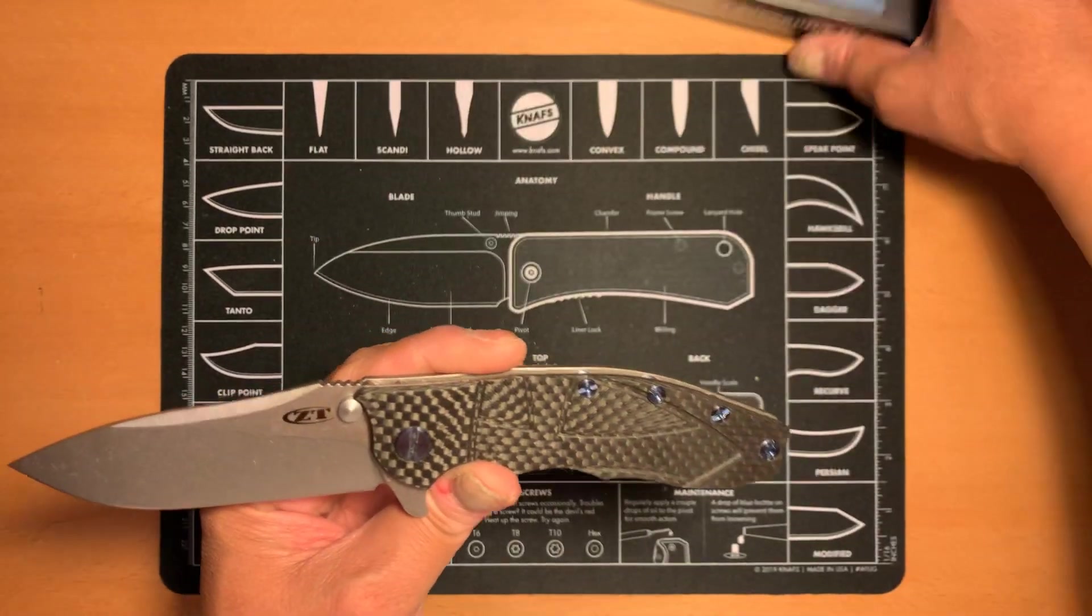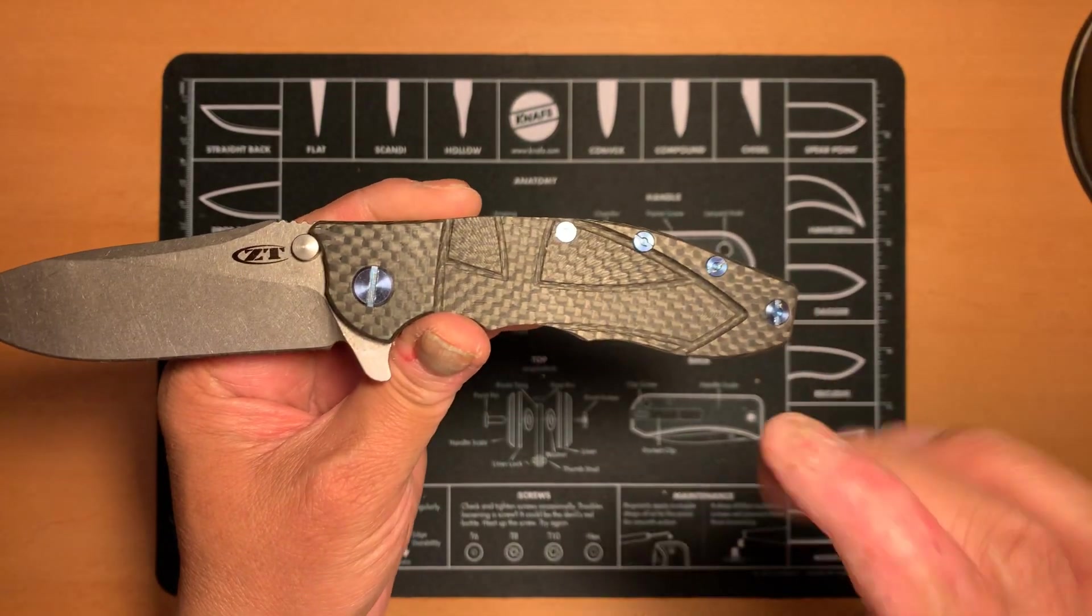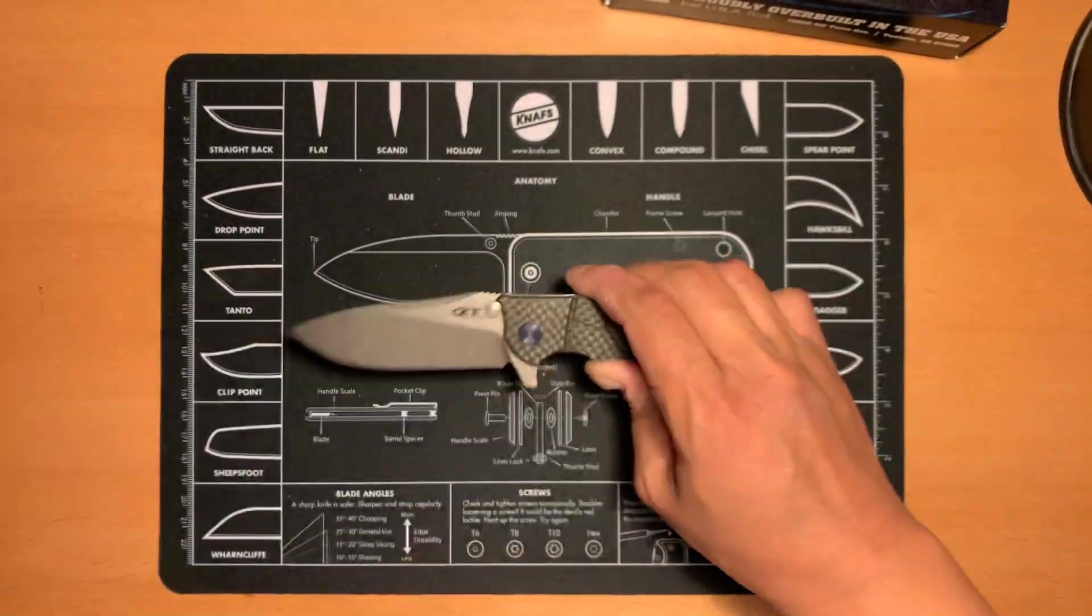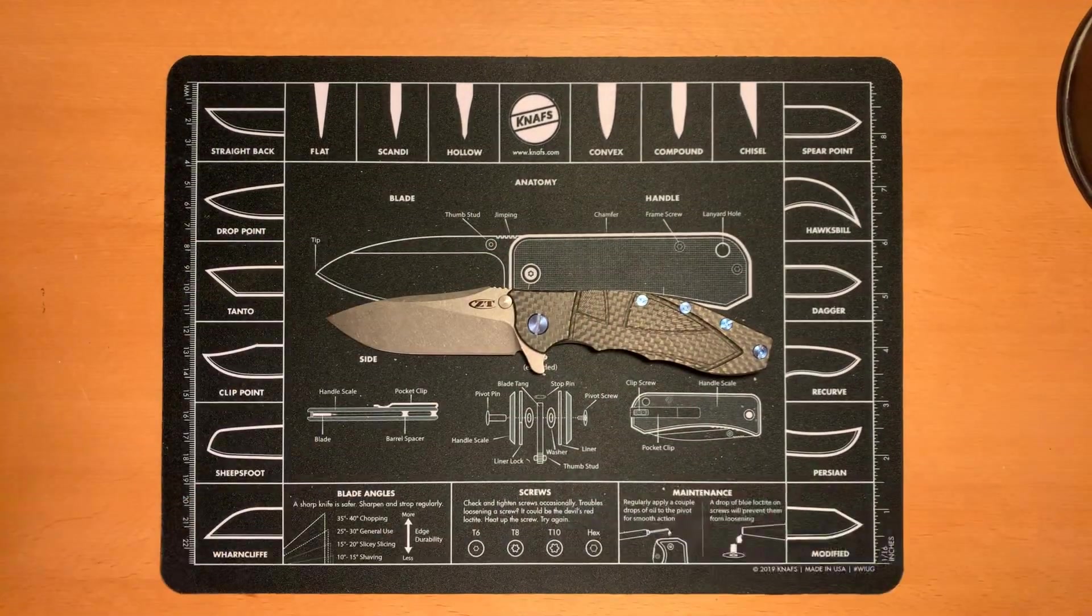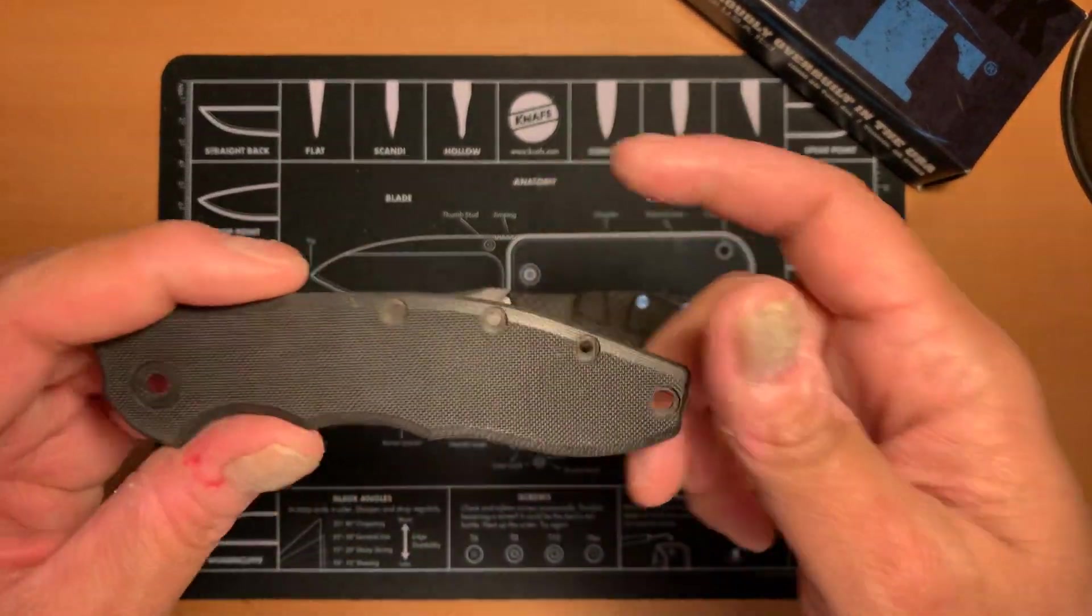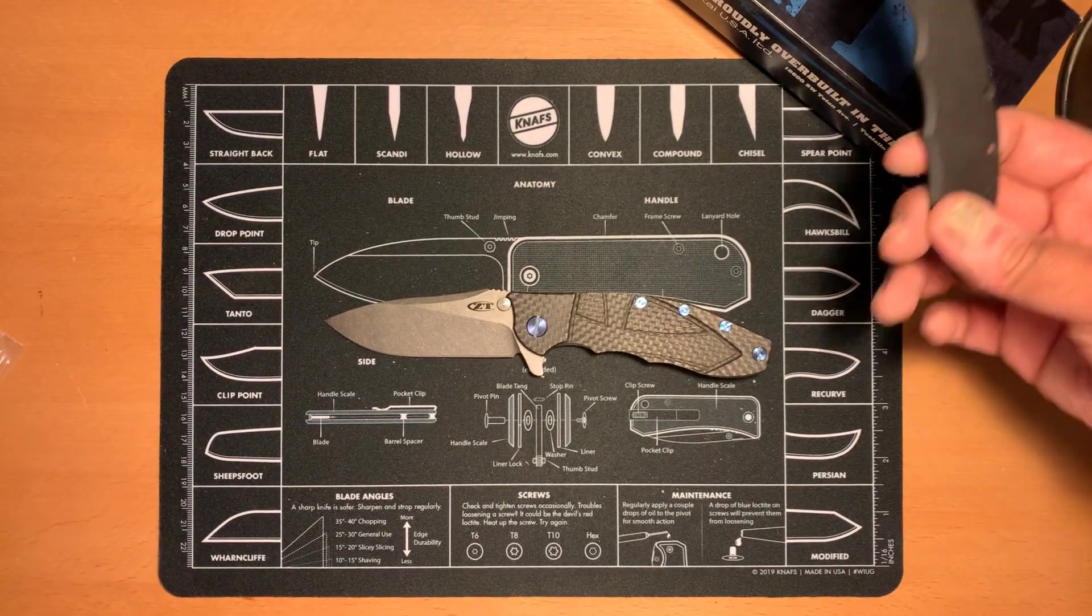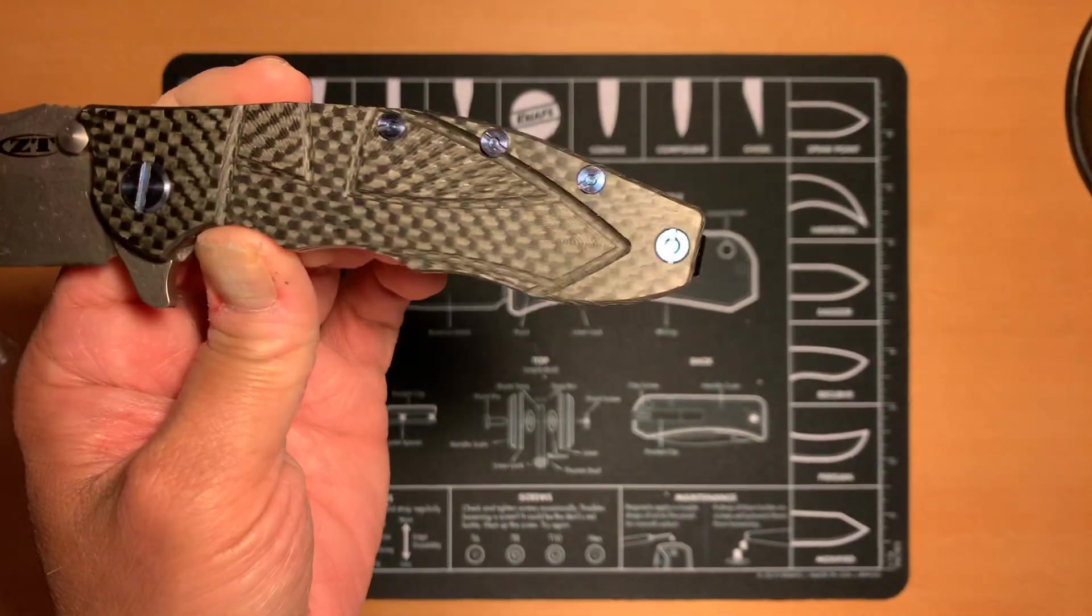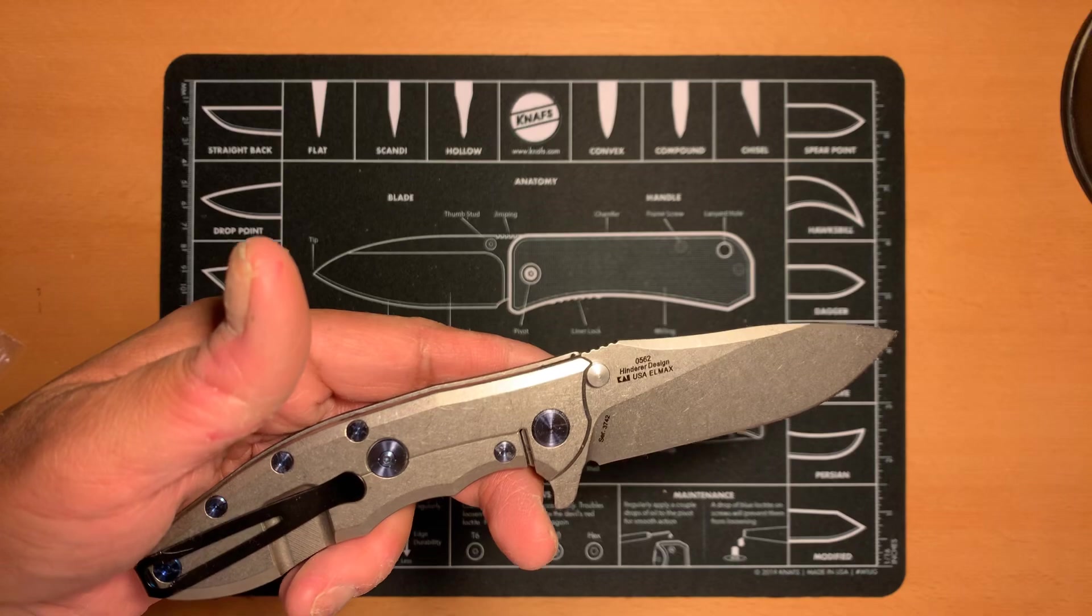So, the steel on the knife is ELMAX steel. This has the carbon fiber scales on it. Like I said, this knife was upgraded from the original. The original just had black G10, which I actually have in this box. In fact, maybe I'll go ahead and take that out so you guys can see that. This is the original casing that comes with the knife. Let's take that out. So, here it is.